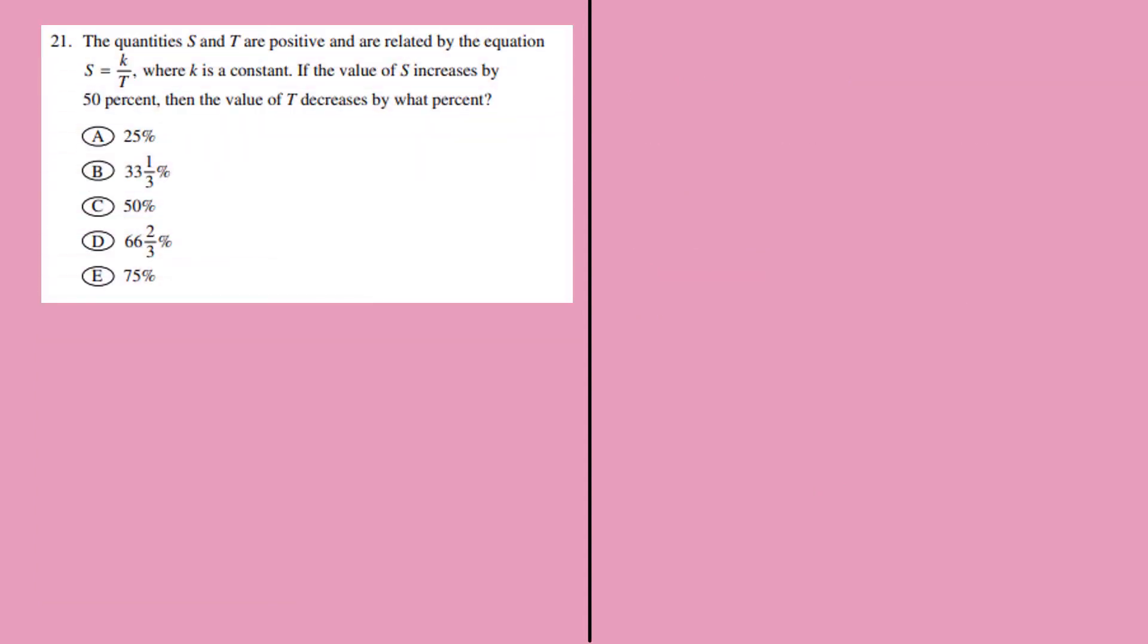The next question: there are two quantities S and T which are positive, satisfying the relation S equals K by T. K is a constant. S is increased by 50 percent, and we're trying to find what is the value that T decreases and what is the percentage.